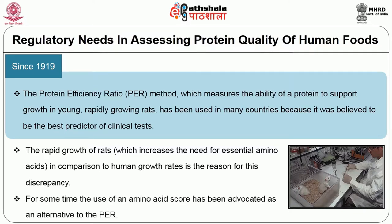For some time, the use of an amino acid score has been advocated as an alternative to the PER. For example, using a ninhydrin assay you can separate all the amino acids — both essential and non-essential — that a protein contains and assign a chemical score for protein quality assessment. People have shown that rather than using a rat study with its overestimates or underestimates, a chemical amino acid score serves as a better alternative method.